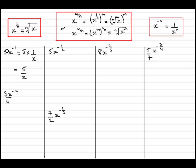So if this was 5x to the minus 2, it would end up being 5 times 1 over x squared, which would be 5 over x squared. And so on. With a bit of practice you should be able to go from there to there.